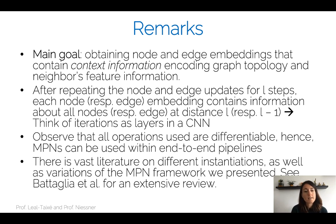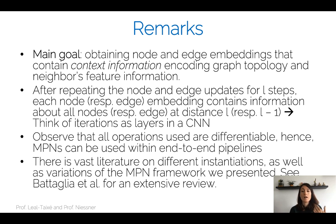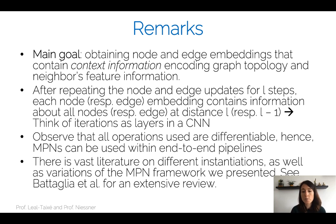There is a large literature on different types of graph neural networks with different operations for each update step. I would recommend looking at the cited paper for an extensive review of many of these models — if you want to see what types of message passing network models are out there, I recommend reading that paper.